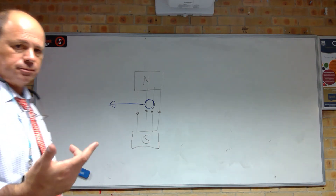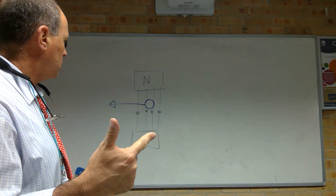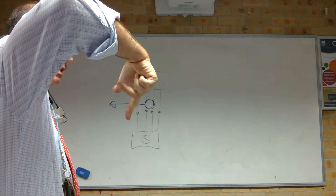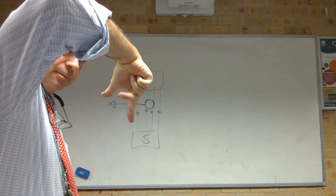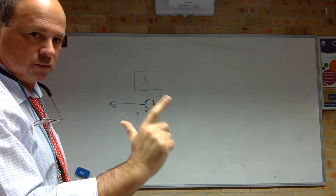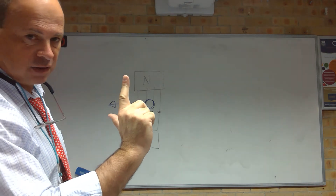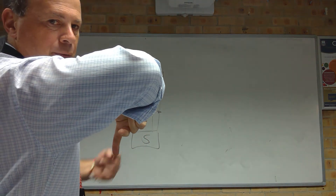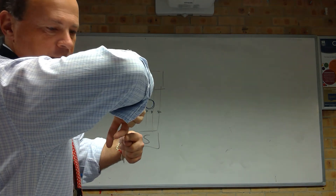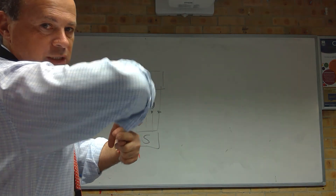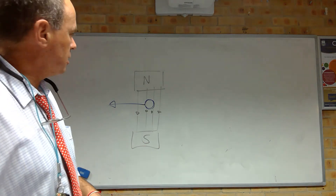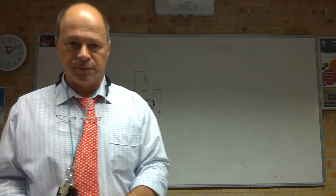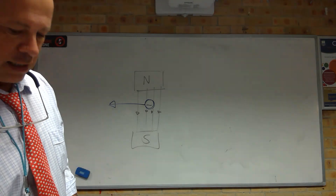Okay, right hand rule. Force is to the right — wait, the field is pointing up, so I need to point it down. Our current: my third finger is pointing toward you, so that means this end is a negative because the current is coming out of the board.